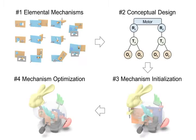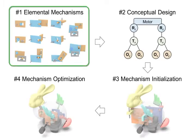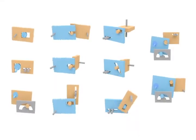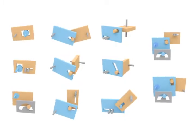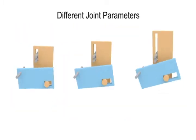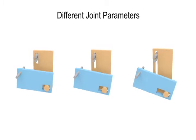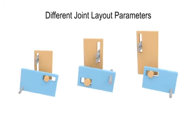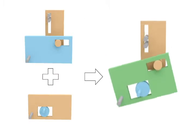Our system has four technical components. First, the elemental mechanisms. We identify 11 elemental mechanisms that are commonly found in wind-up toys and analytically model their geometry, kinematics, and connections.